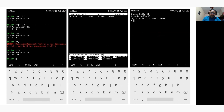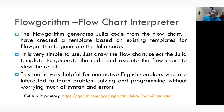The next tool is the flowchart interpreter, created by Devin Cook. It generates source code from a flowchart and supports 18+ languages, but lacked Julia support, so I developed that addition. It is very simple to use: just draw the flowchart, select the Julia template to generate the code, and execute the flowchart to view the result. This tool is very helpful for non-native speakers who want to learn problem solving and programming without worrying much about syntax and errors.